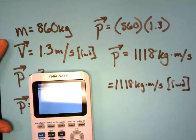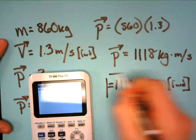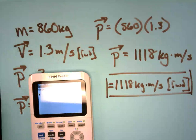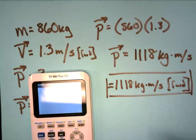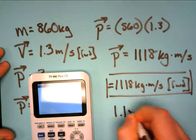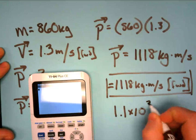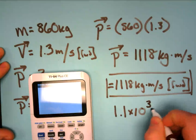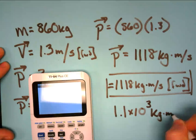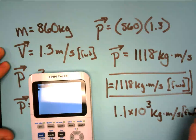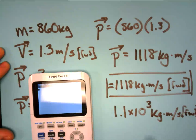Remember, we have to have that direction in our answer. If you were keeping significant figures, it would be 1.1 times 10 to the third kilograms times meters per second forward. Cool beans — there's number one. Let's now move on to number two.